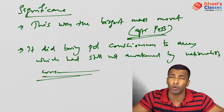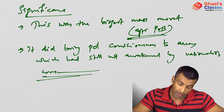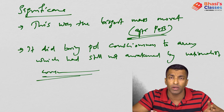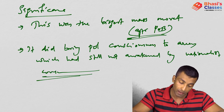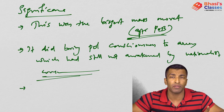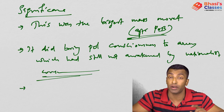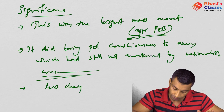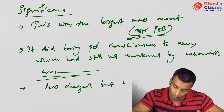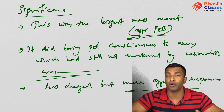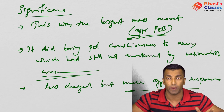The movement managed a very good mass base, and as Bipin Chandra stated, it was a less charged but more effective response to the involvement of Indians in World War One — making it highly significant in the context of the Indian freedom struggle.